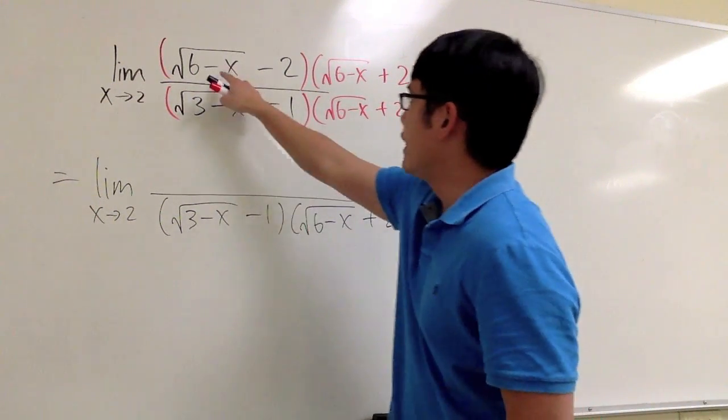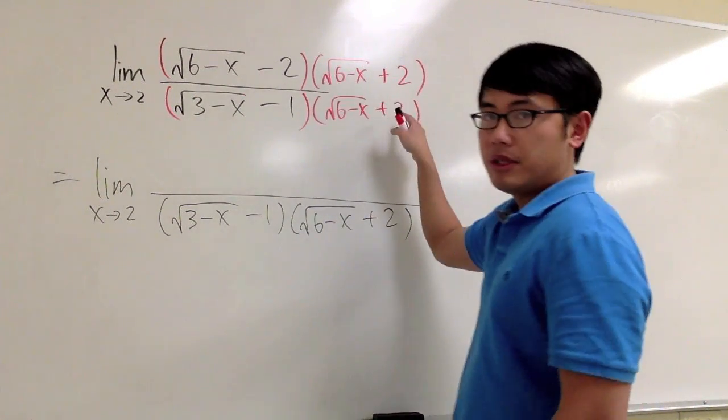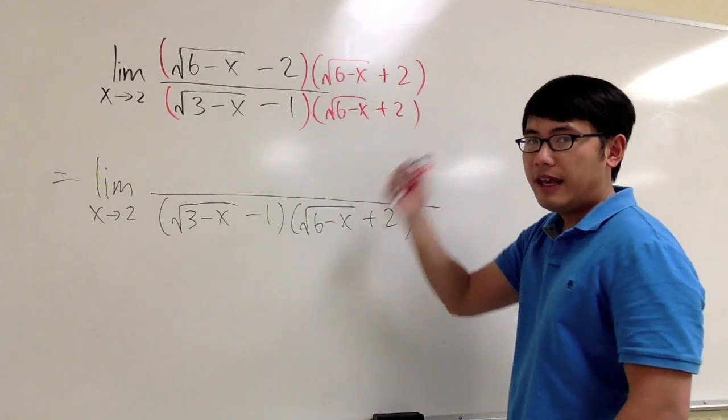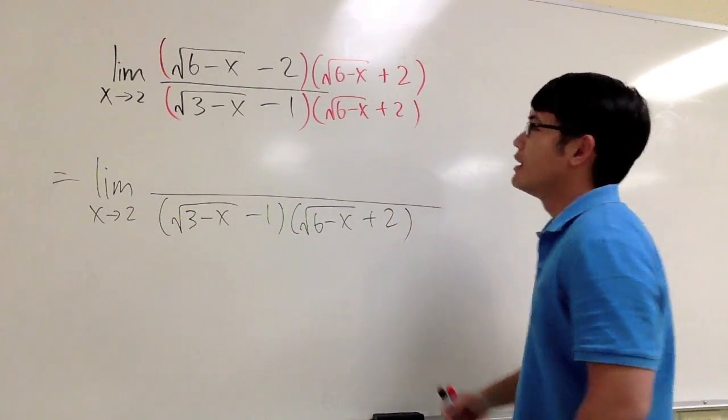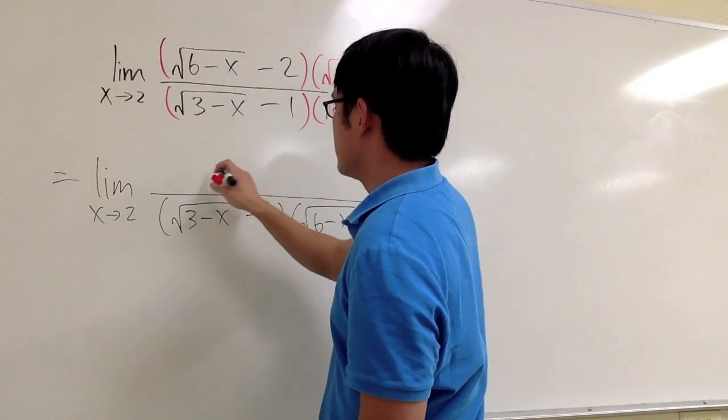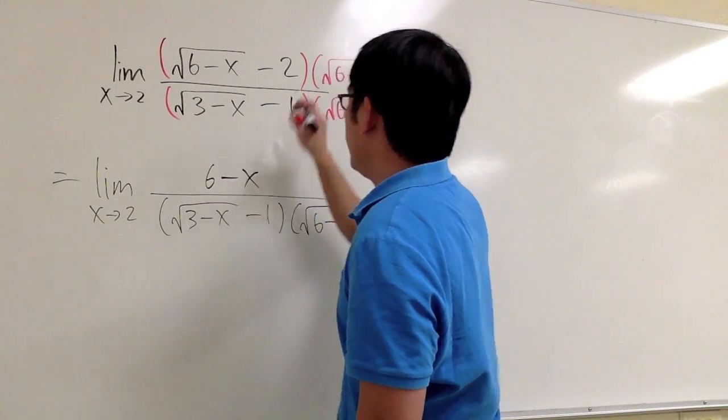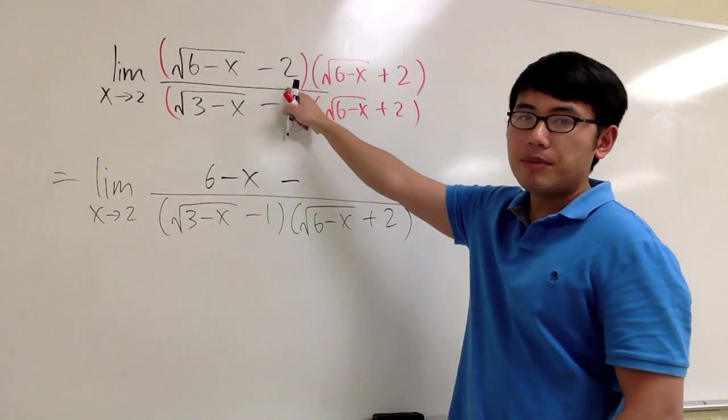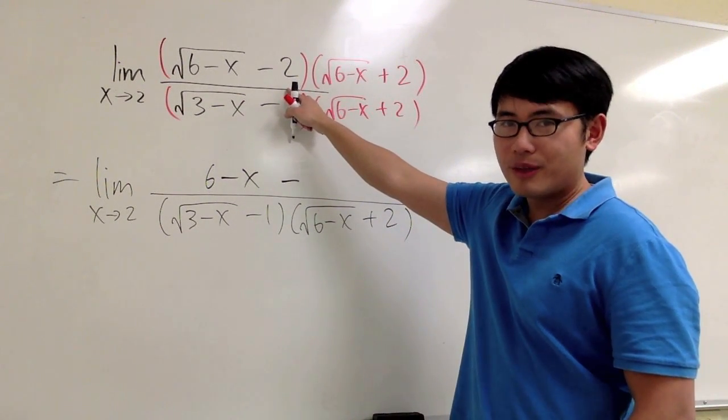On the top, this is in the form of a minus b times a plus b. In another word, we have a squared minus b squared. The first thing squared, which was 6 minus x, and then we are going to subtract the second part squared, namely 2 squared, which is 4.